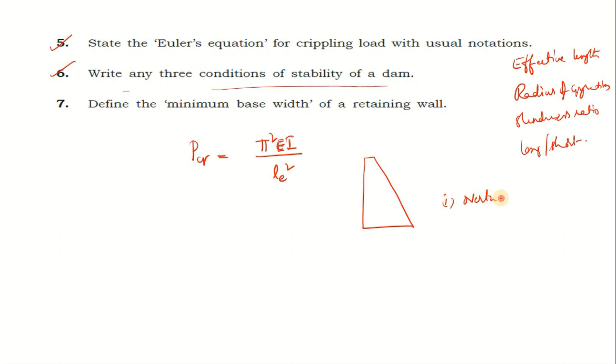Next, write any 3 conditions of stability of dam. First one is overturning: resultant should be within the base. Second case is sliding: frictional force should exceed horizontal pressure.